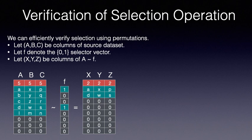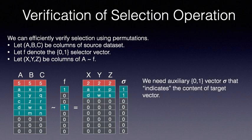To illustrate key techniques, we look at the problem of verifying selection operation in more detail. Let a, b, c be columns of the source dataset, f be the selector vector, and x, y, z be columns of the target dataset. In this specific example, as shown, we should ensure that the two rows of the source dataset, as selected by the selector vector, should be the first two rows of the target dataset, followed by the padding.